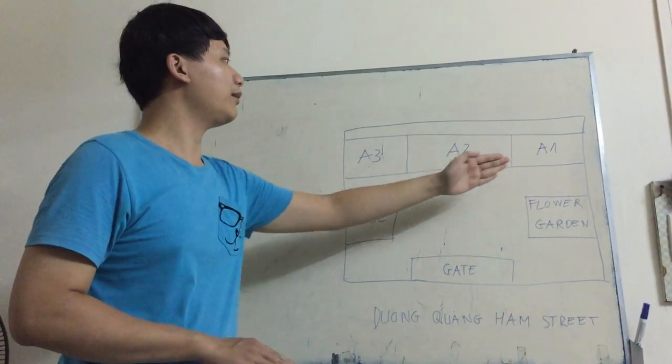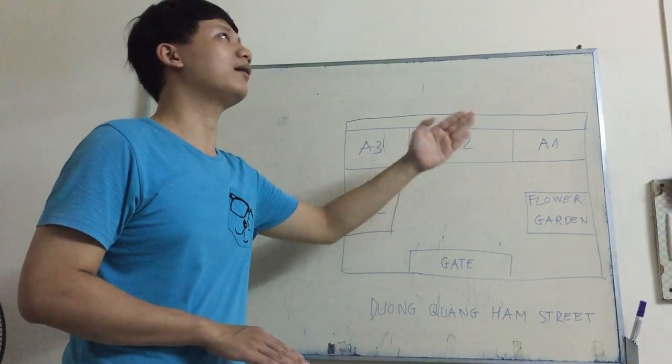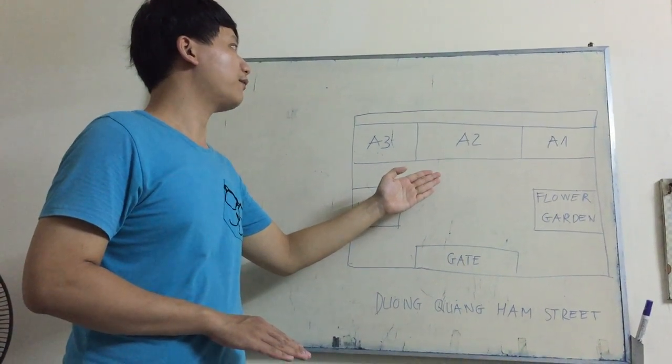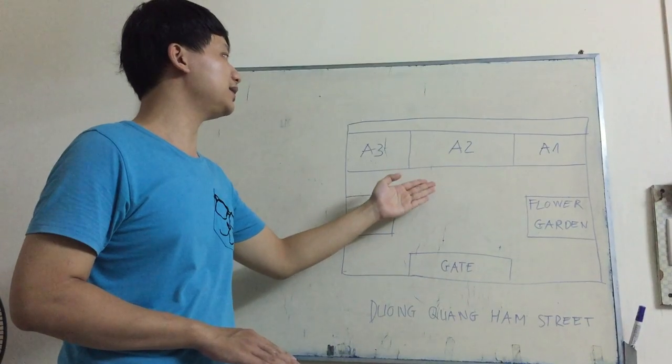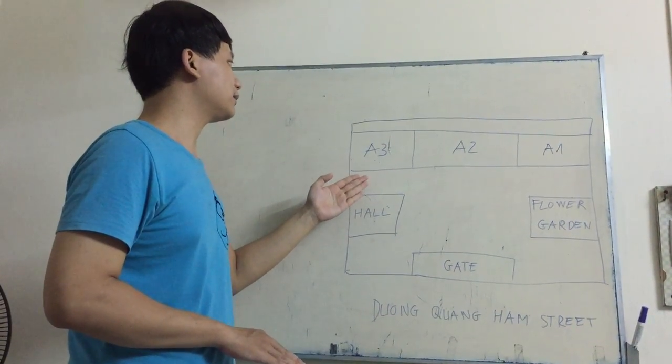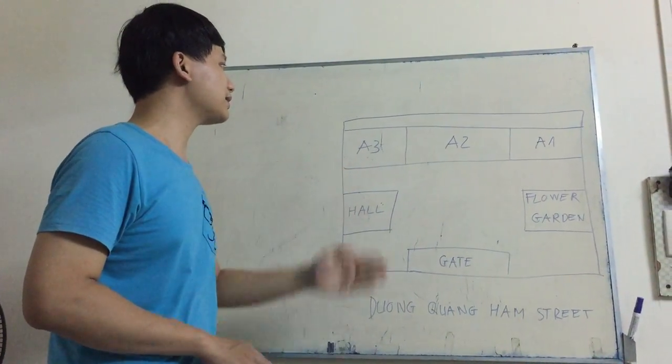A1 building is used for faculty of economics, A2 is used for faculty of science and technologies, and A3 is used for our faculty of foreign languages.